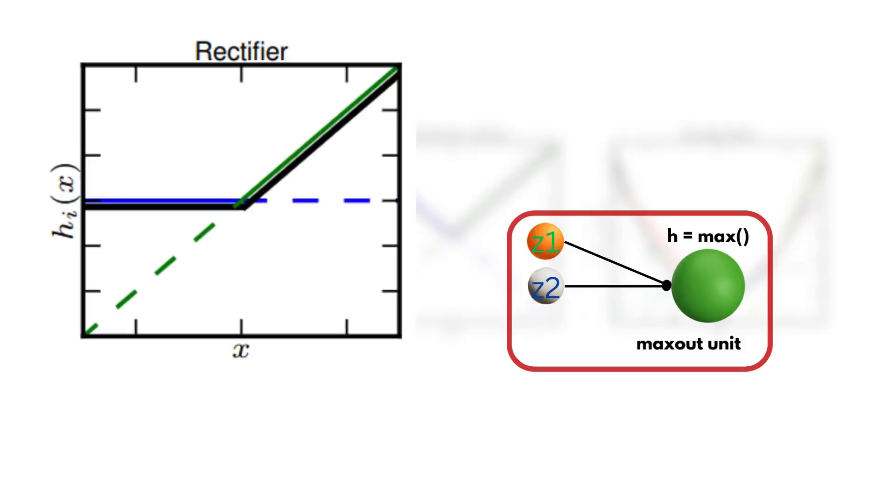First, the ReLU can be easily created with k equal 2. The green line is the first activation function that has a continuous slope, while the blue is set to y equals 0. As you can see, before the x point, the zero value is always selected because it's larger than the green one. After that point, the green line is preferred, thus creating an effective rectifier.